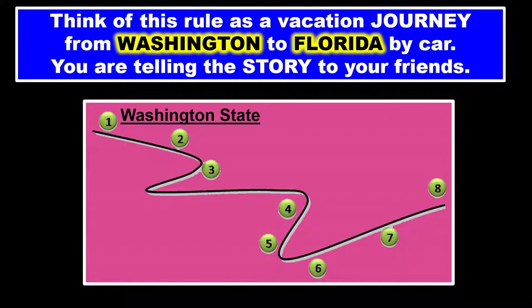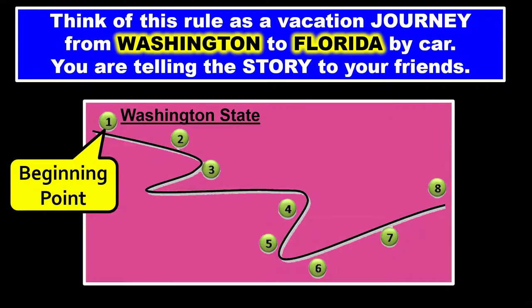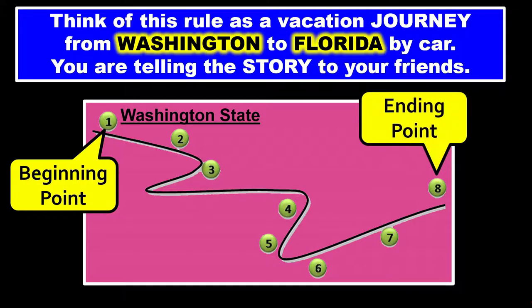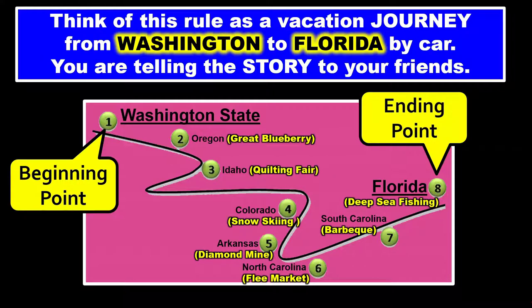Think of this rule as our vacation journey from Washington State to Florida by car. The starting point is Washington State and the ending point is Florida, with a lot of stops in between. You're going to be going through Oregon, through Idaho, through Colorado, Arkansas, North Carolina, South Carolina, and finally the ending point, Florida. Your vacation hasn't reached its ending point until you get to Florida.